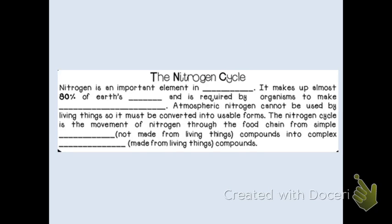To start things off, we're going to start with the nitrogen cycle. The nitrogen cycle is an important element in ecosystems because it makes up almost 80% of Earth's air. So 80% of Earth's atmosphere is actually made up of nitrogen. And we need nitrogen — all living organisms need nitrogen because we have to have it to make proteins. Nitrogen is an important ingredient in amino acids, and when we put amino acids together, we make proteins.